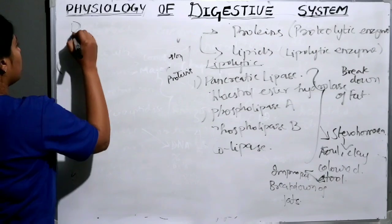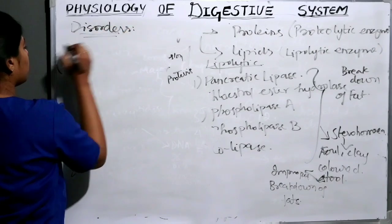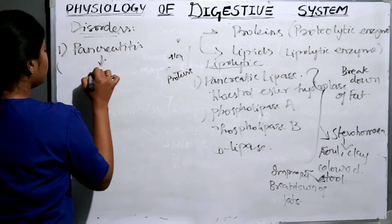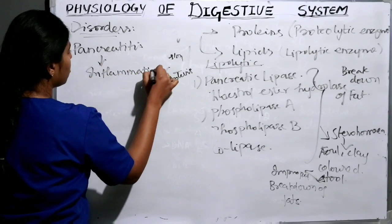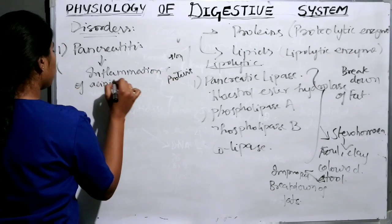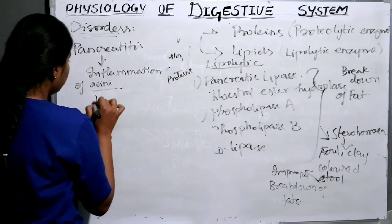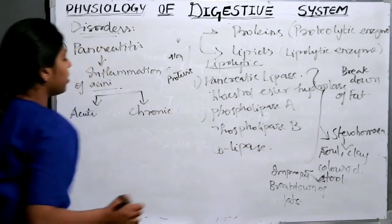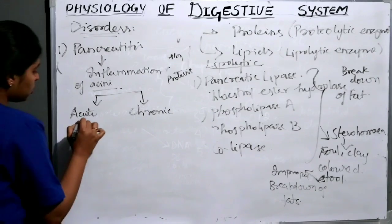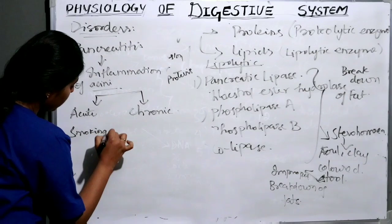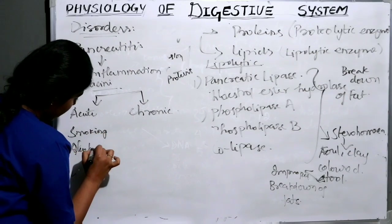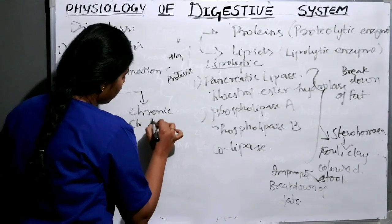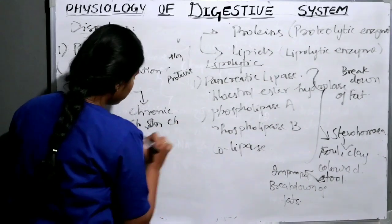Next, disorders. The first is pancreatitis, that is inflammation of acini or pancreatic cells. It may be of two types: acute pancreatitis and chronic pancreatitis. Acute pancreatitis occurs due to smoking and alcoholism. Chronic pancreatitis occurs due to chronic smoking and chronic alcoholism.